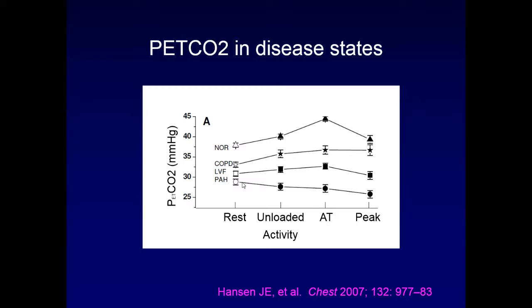An audience question: do you ever see COPD patients with comorbid heart failure show the same end-tidal CO2 signal as PH patients — dropping CO2 with exercise — particularly if they can drop their cardiac index? The answer: this pattern is seen only in pulmonary hypertension, or occasionally in true hyperventilatory states such as metabolic acidosis from renal or liver disease. You don't see it in combined COPD and heart failure. The talk concludes with thanks.